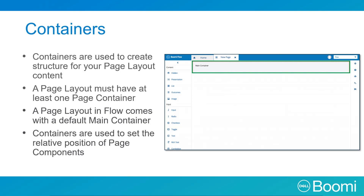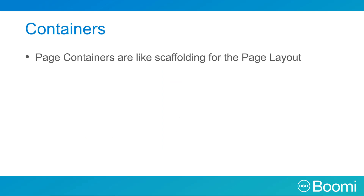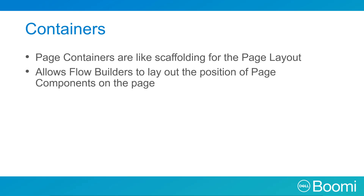Containers are used to set the relative position of page components, or in other words, build the structure of your page layout. As we will see later in the upcoming activity, when we embed a container inside a container, the new container is nested by default in rows. Page layouts are like scaffolding to your page layout, and page containers are used to layout the position of your page components within the page layout.